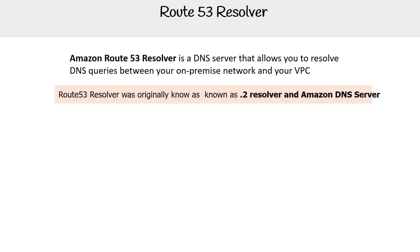Route 53 Resolver was originally known as the point-two resolver, or Amazon DNS server. I don't remember the exact reason why it was called point-two — there is a story behind that which is now forgotten, probably covered in one of my older videos when I used to remember.